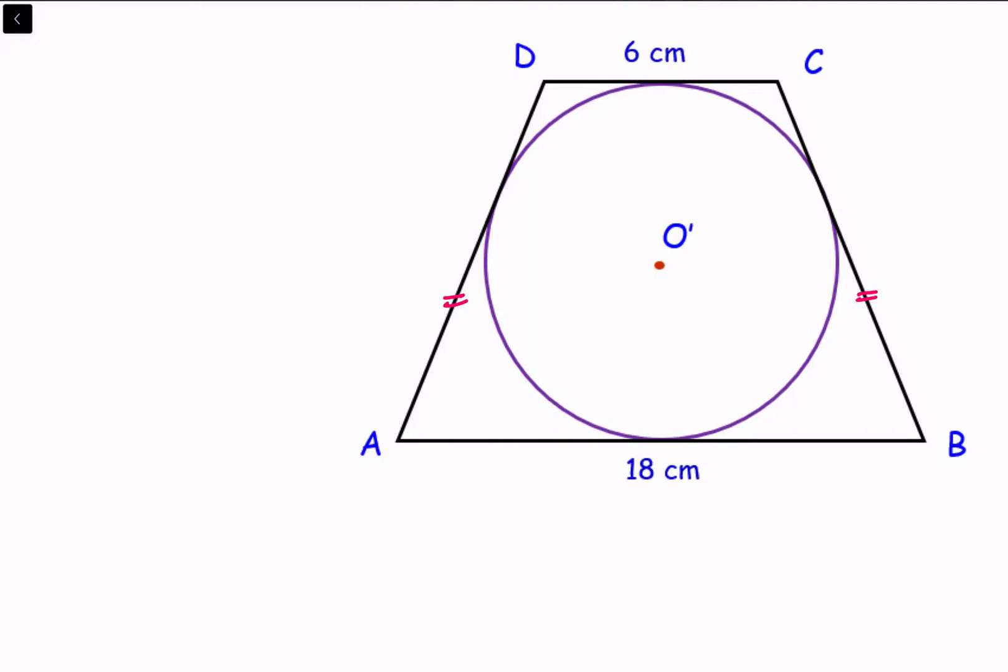Here we have to find the radius of the circle. So let's first draw this diameter. We know that the radius is perpendicular to the tangent. So this angle is 90 degrees.